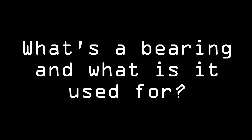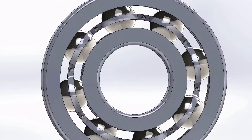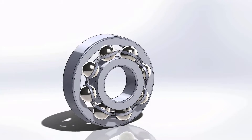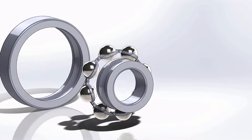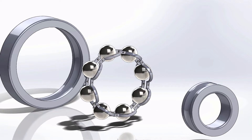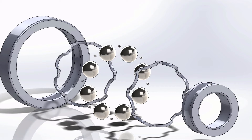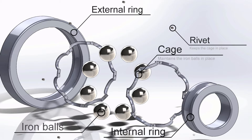What is a bearing and what is it used for? A bearing is a mechanical assembly used in all sorts of mechanical and industrial systems that allows two objects to rotate with respect to each other with very little friction.